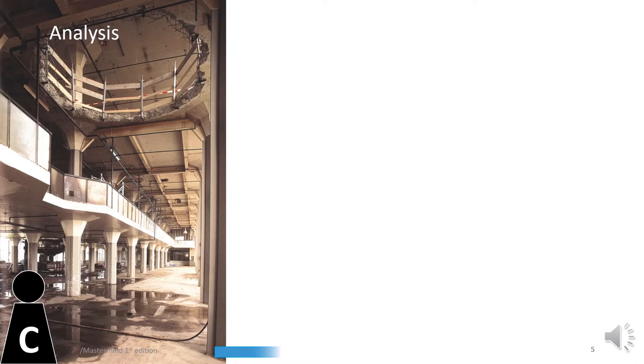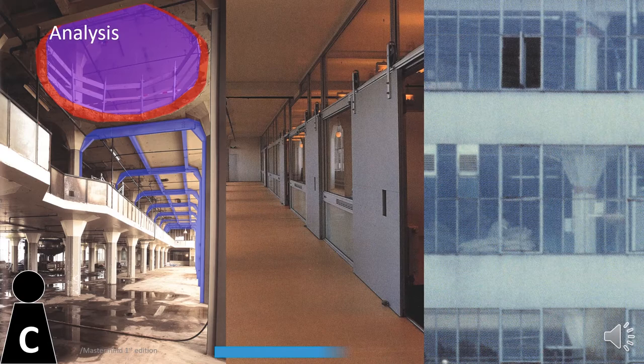The Van Nelle Factory Adaptive Reuse is a good example of an intervention where most efforts were oriented towards the reversal of previous interventions. Non-original reinforcing structures got removed, floors got recast with a new finish, and interior walls got added.